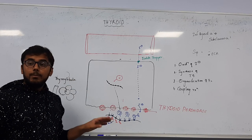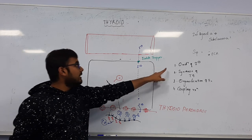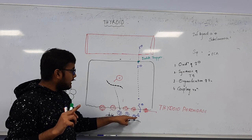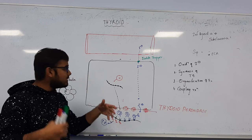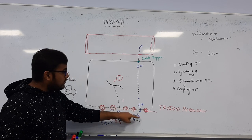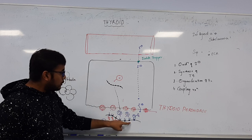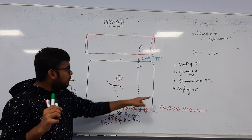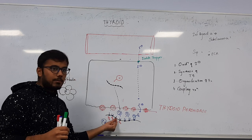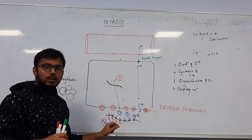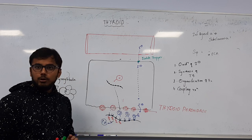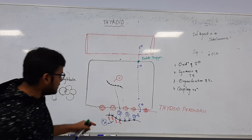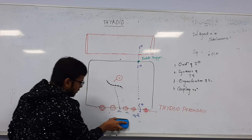Thyroid peroxidase produces T3, T4, and T2 within the lumen. To make a simplified picture: thyroglobulin in the lumen contains T3, T4, T2, T3, T4 - all embedded in it. All of this re-enters the follicular cell through a process called endocytosis, forming separate vesicles. There are millions of such vesicles in the follicular cell.